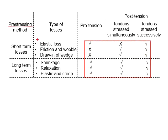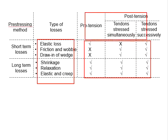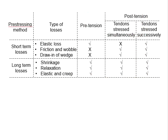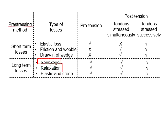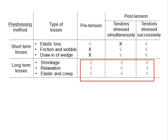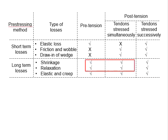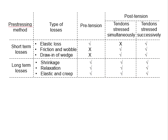Let us look at the combinations of losses due to different methods of pre-stressing. All pre-stressed members endure long-term losses — that means losses due to shrinkage, steel relaxation, and creep always appear regardless of the pre-stressing method used. Their calculations will be totally the same, using the same set of equations.